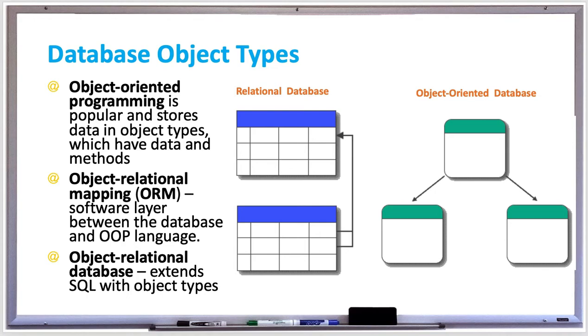The object relational database extends SQL with object types. Some databases refer to subtypes as subtables and refer to supertypes as supertables.